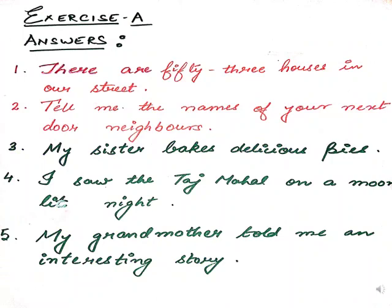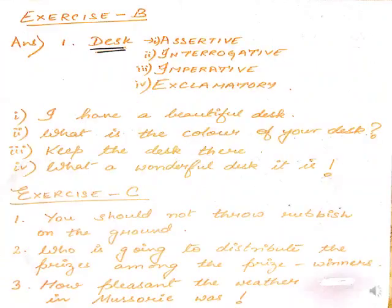Here are all the answers given in this slide — that is Exercise A of page number 3. Then Exercise B has questions 1, 2, 3, and 4. Four words are given from which you have to make assertive, interrogative, imperative, and exclamatory sentences. One example is shown; the rest three you have to do on your own. Exercise C also starts here — rearrange the following group of words into proper sentences. The type of sentence to be constructed is mentioned in brackets. Half of Exercise C up to question 3 is shown in this slide, and it continues in the next slide.